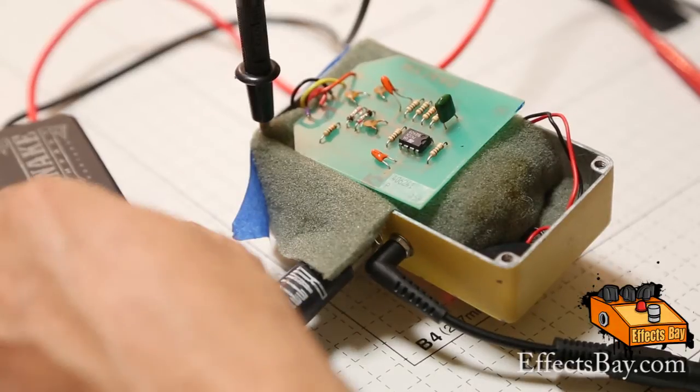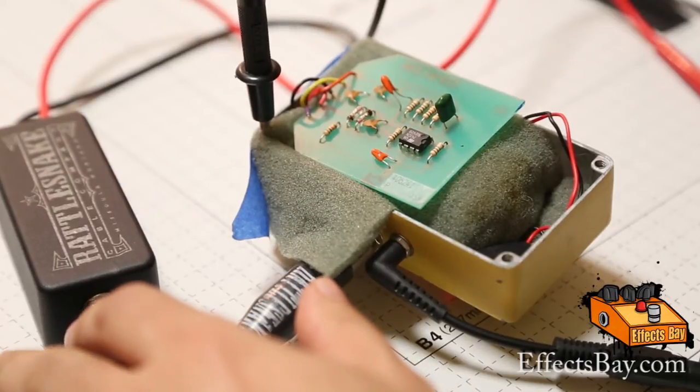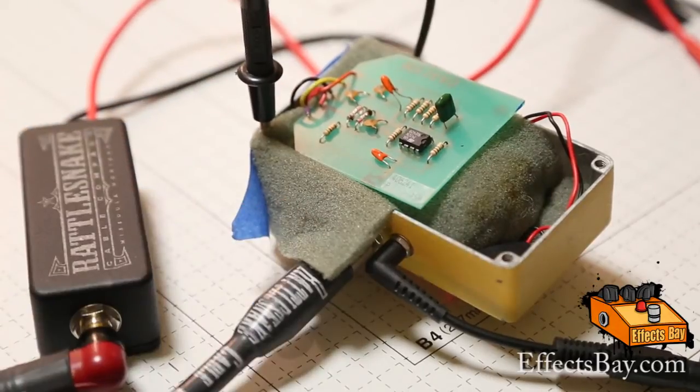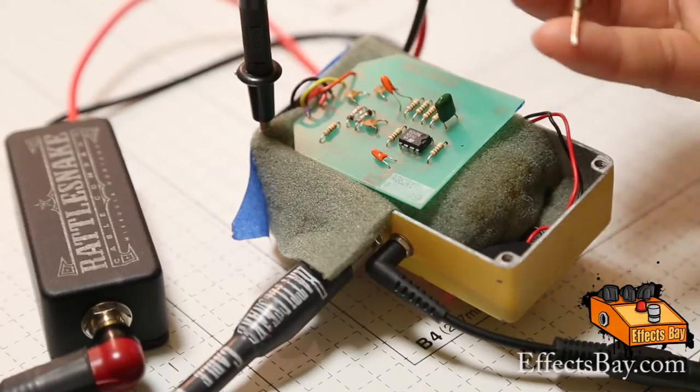Basically we have this little box here. It takes an output to the amp and then we have our signal leads - a ground and signal lead coming off of it.